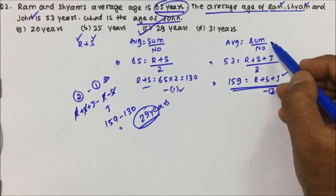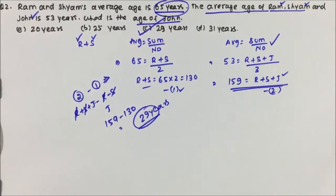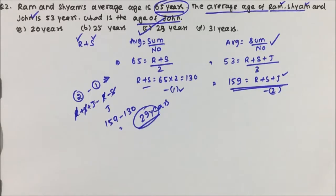These kinds of questions are based on average, and in average we have only one formula: sum divided by number. Ages is one of the very easy and important topics. I hope you understood the concept and the questions. Thanks for watching the video.